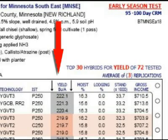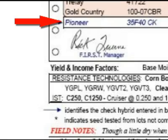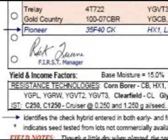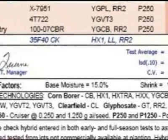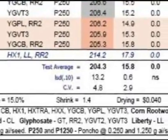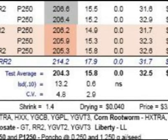At the bottom of the data table, you'll see a line for the check hybrid, which is a hybrid that's included in both the early and the full season test. And then below it, the averages for yield, moisture, standability, stand, and income, as calculated by the income factors listed below those values.